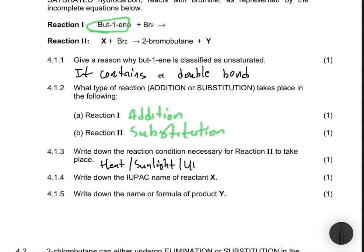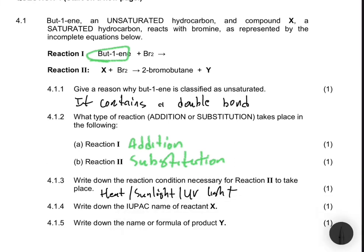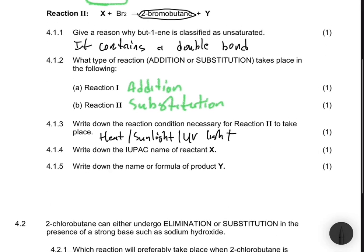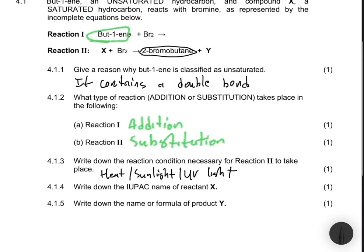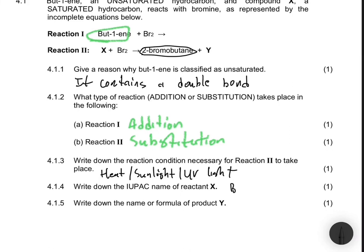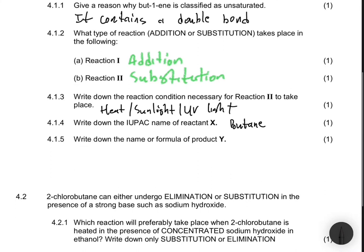4.1.4 says write down the IUPAC name of reactant X. Reactant X is a hydrocarbon, and when we substitute bromine we get 2-bromobutane. It should be quite clear that the IUPAC name of reactant X will be butane, a hydrocarbon.